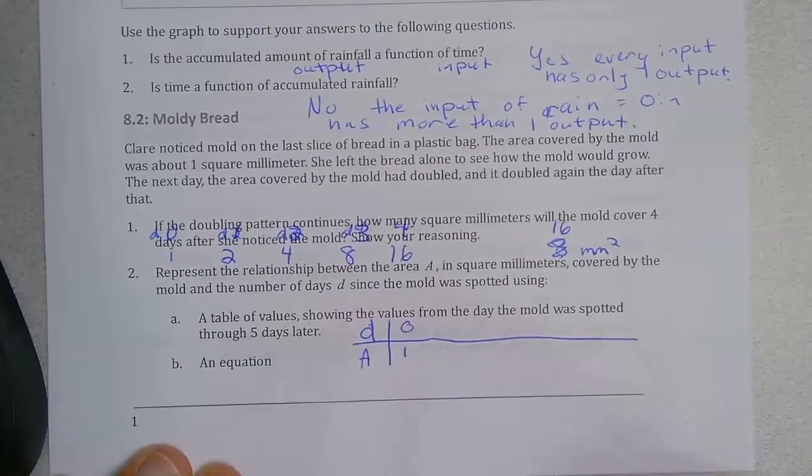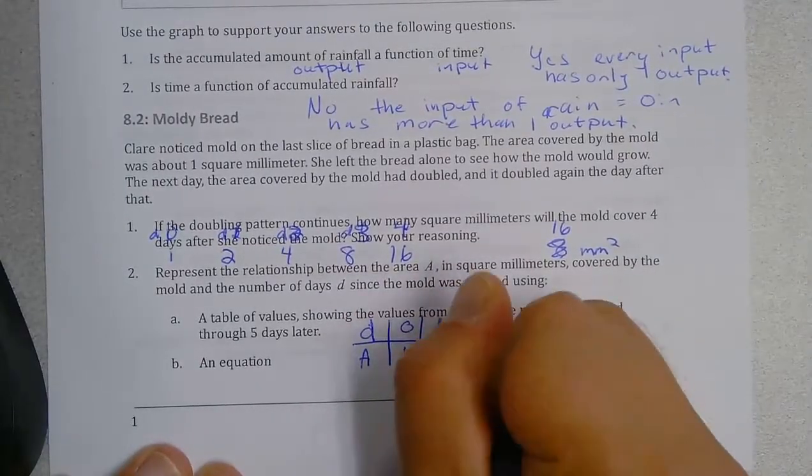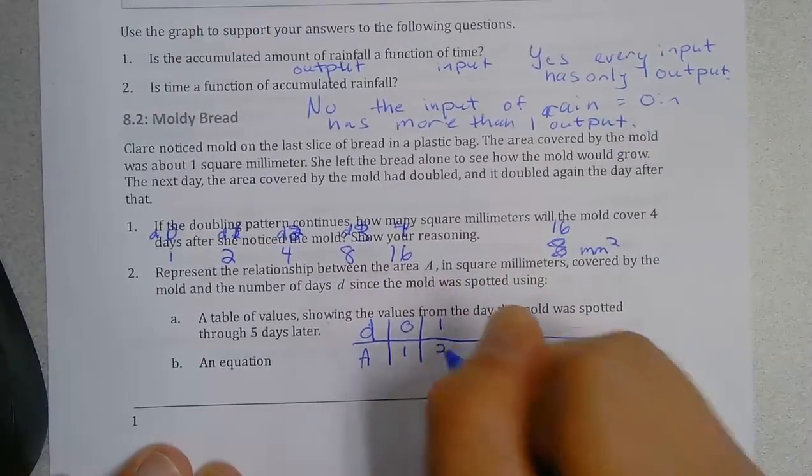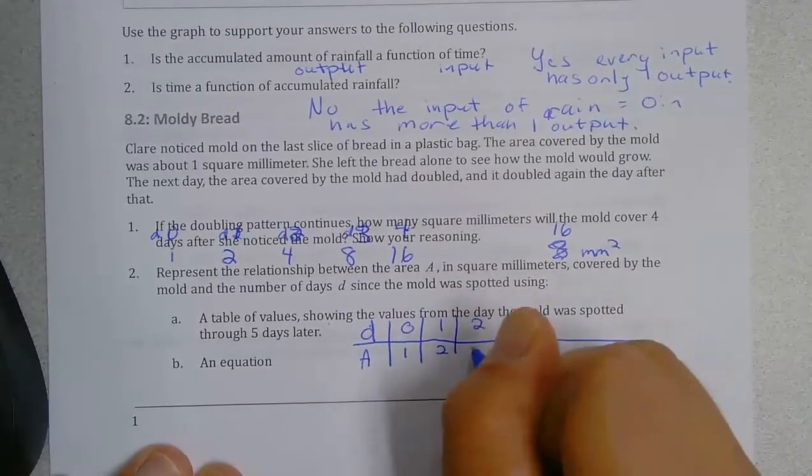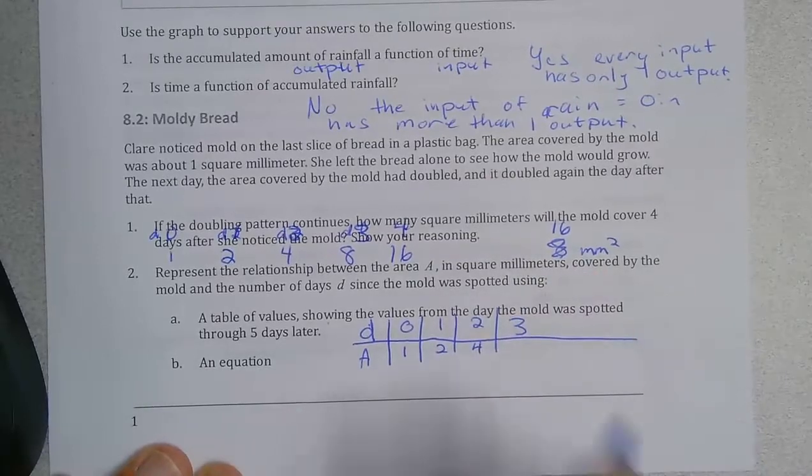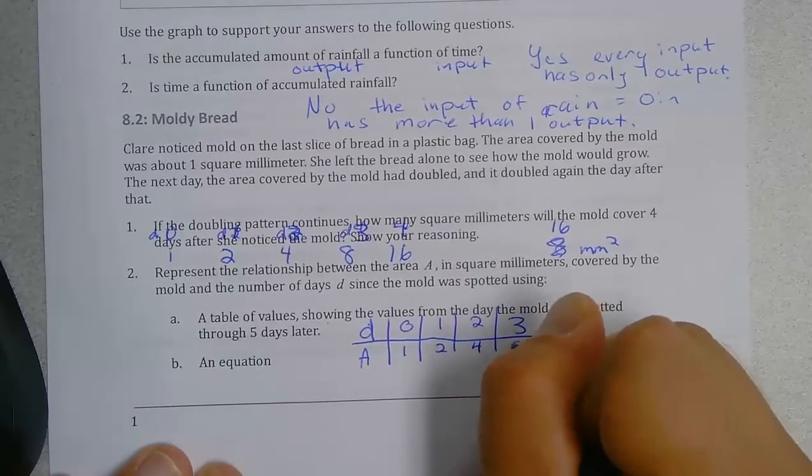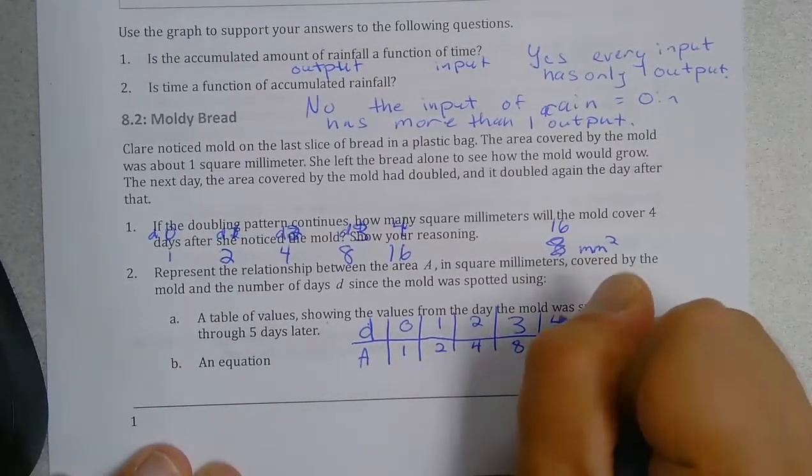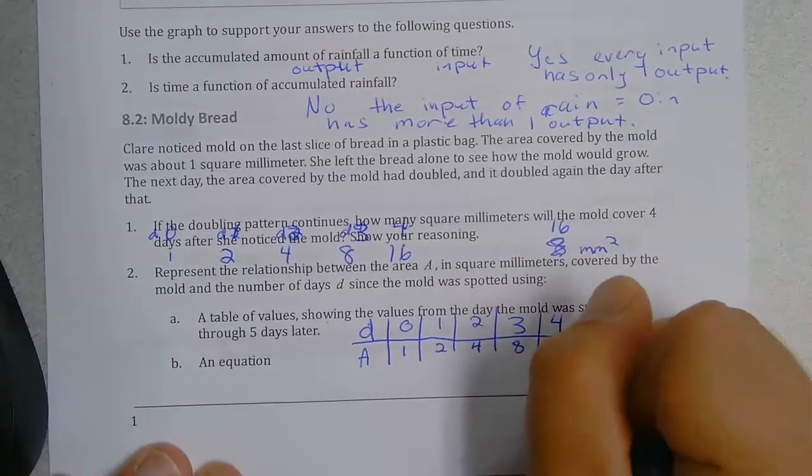So day zero she started with one square millimeter. So after the first day it doubled to two. Second day we're at four. Day three we're at eight. And then day four, the fourth day of the experiment, she's at 16.